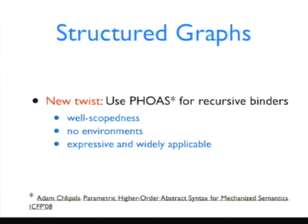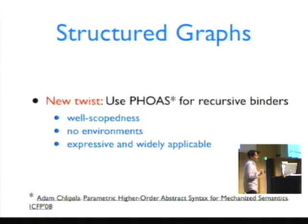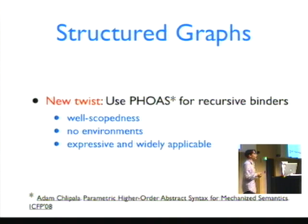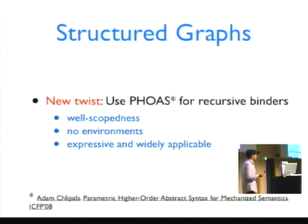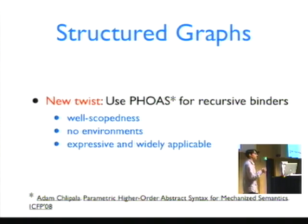What we propose in this work is a new twist to this whole idea, which is to use a parametric higher-order abstract syntax (HOAS) representation of binders. The advantage of this parametric HOAS representation is that it combines a number of features: you have well-scopedness, you typically don't have to manage environments, it's quite expressive in the types of functions you can write, and it's also widely applicable — it works in many different types of languages, including Agda and Coq.